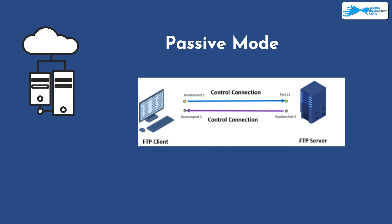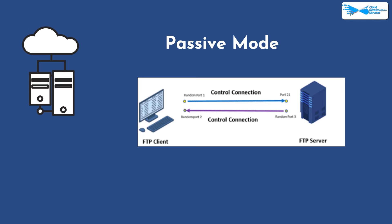Passive mode is used in scenarios where the connection establishment would otherwise be blocked. In this mode, the client initiates all connections. The server sends the details of the port the user needs to connect to. The user then connects from a random client port to port 21 of the FTP server. The server sends a PASV command indicating which port the client should connect to, and once the connection is established, data transfer occurs through the agreed-upon ports.